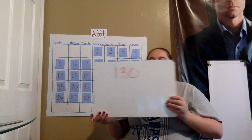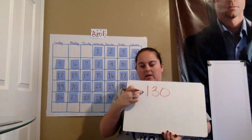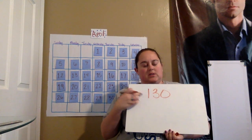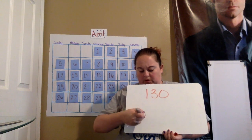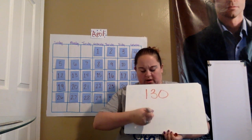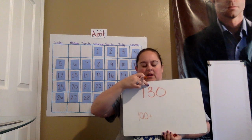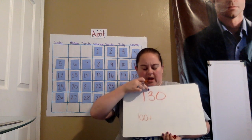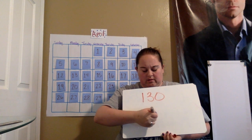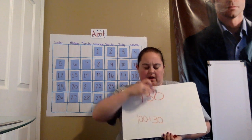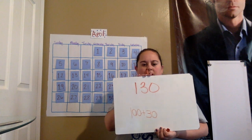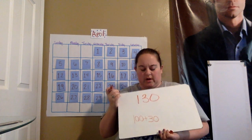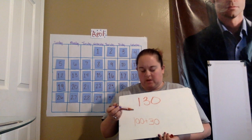It is day number 130. So that means we have how many hundreds? We have one hundred, which makes the number 100. We have how many tens? Three. Three tens makes the number 30. And then we have zero ones. So we have the number 130.